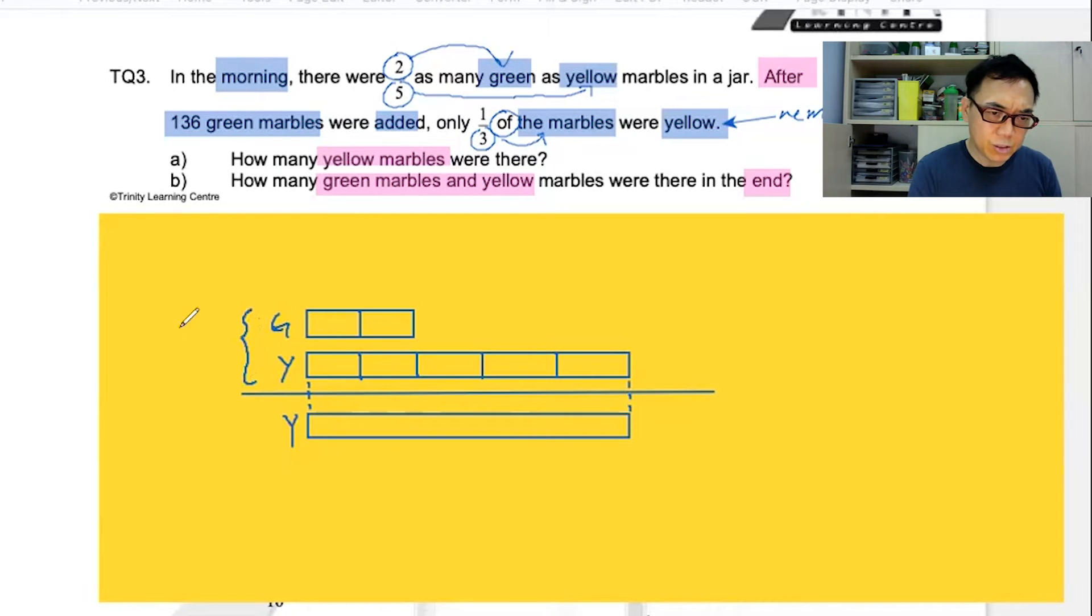Now, this model here represents the start. Of course, that means the model below represents the end. In the end, only one-third of the marbles were yellow.